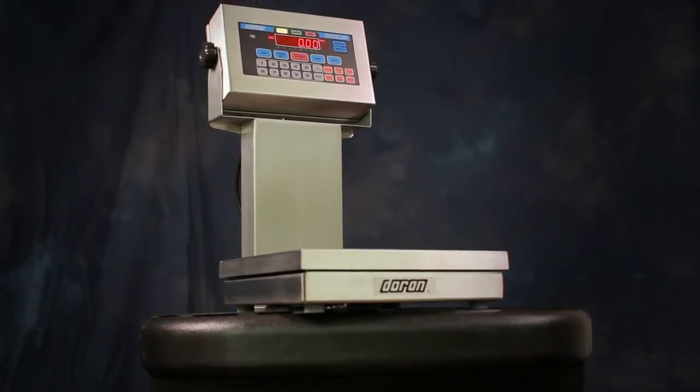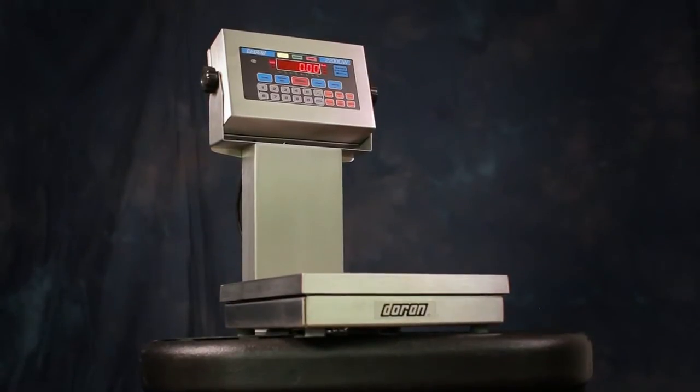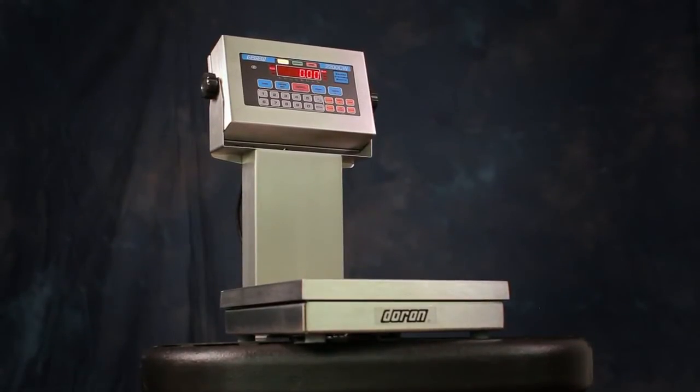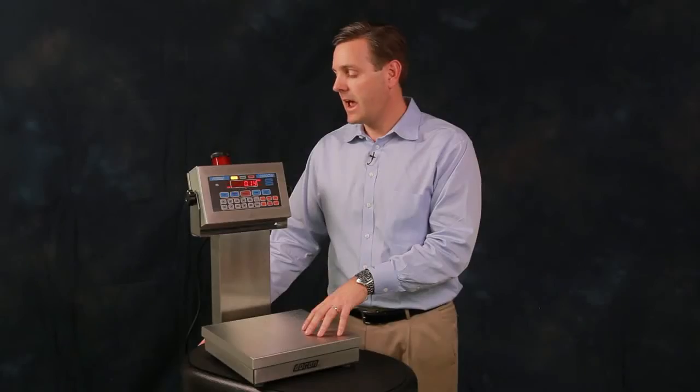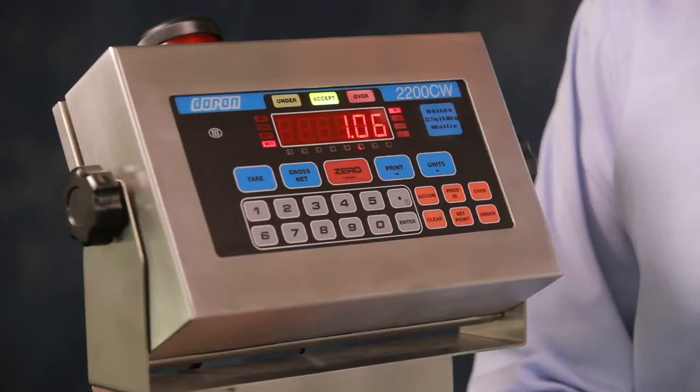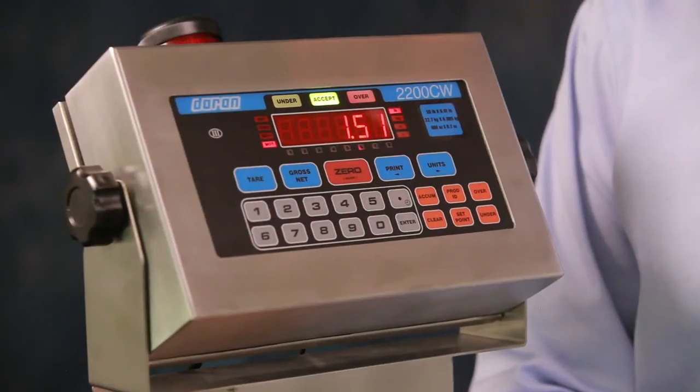The check weigher is used to check the tolerance of items that you place on the scale and verify that they're good before you send them out to your customer. As I add weight to the scale, you'll see it goes into the accept range and then into the over range.